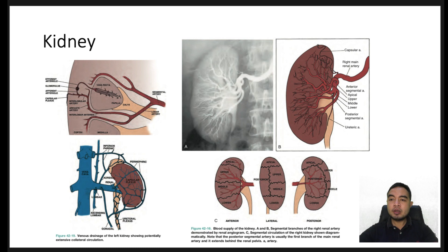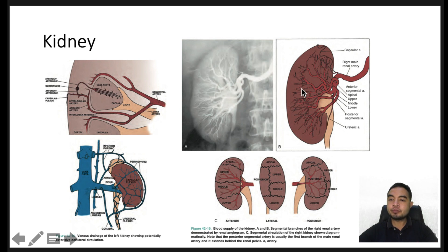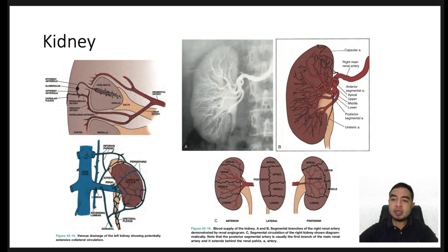The kidneys are end organs, which is responsible for their vulnerability to infarction. The renal arteries extend from the aorta and then branch into several segmental arteries and arterioles before becoming glomeruli. Each artery runs posterior to their respective renal veins. Occasionally an accessory renal artery will arise, but in general each kidney receives a single main renal artery. Each renal vein drains directly into the IVC and is located anteriorly to its respective renal artery when entering the kidney.